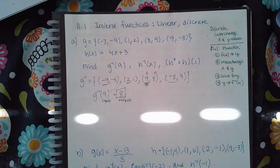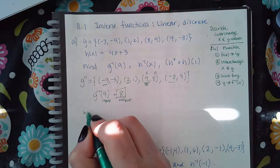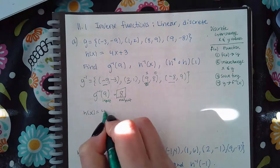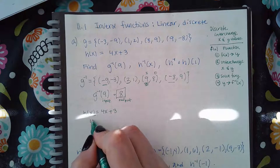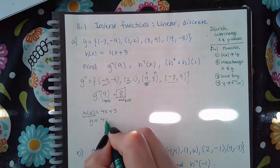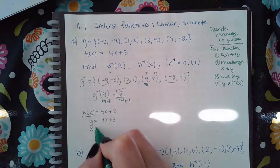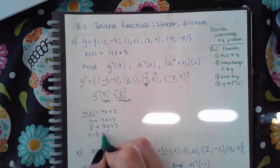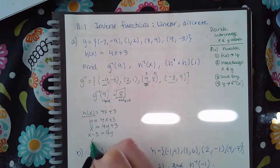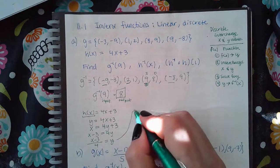For h(x), we follow all four steps. First, change the function notation into y. Then interchange x and y — every y becomes an x and every x becomes a y. Then solve for y: subtract 3 and then divide by 4.